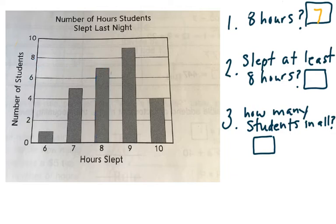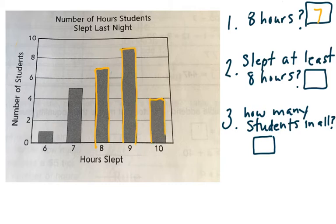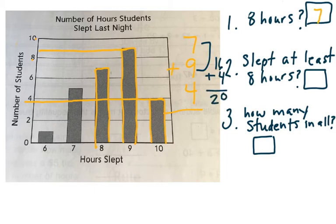Question two, how many slept at least eight hours? Well, the kids that slept eight hours, they slept at least eight. The students who slept nine hours, that's at least eight. It's in fact more. And the students who slept 10 hours, all of those students would be included. So for eight hours, we have seven students. For nine hours, we have between eight and 10 is nine. Nine and 10 hours is four. So I'm going to add those together. Seven and nine is 16 plus four is 20. So there are 20 students who slept at least eight hours.